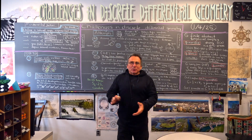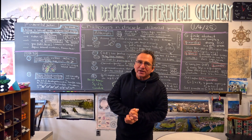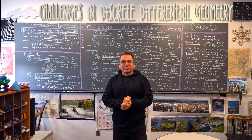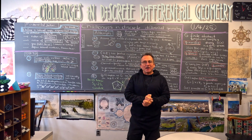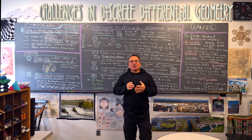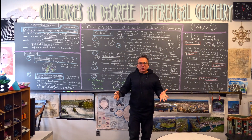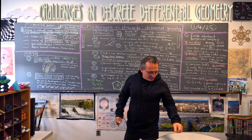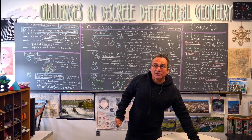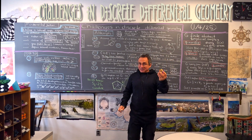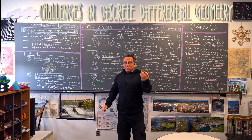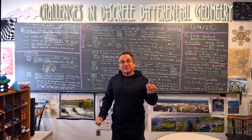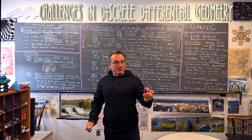A fundamental problem in discrete differential geometry is to define the exponential map in a discrete manifold. We need a notion of geodesic flow and we need a notion of sectional curvature.